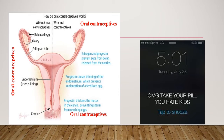Estrogen has some effect in inhibiting follicular development because of its negative feedback on the anterior pituitary, which slows FSH secretion, though it is not as prominent as progesterone's effect. Another primary mechanism is progesterone's ability to inhibit sperm from penetrating through the cervix and upper genital tract by making the cervical mucus unfriendly. Progesterone-induced endometrial atrophy may deter implantation, but there is no proof this occurs.